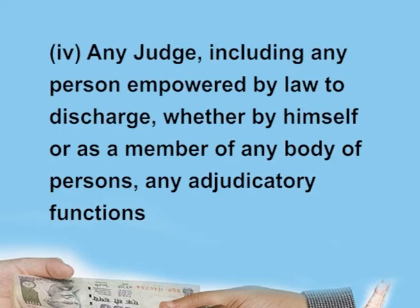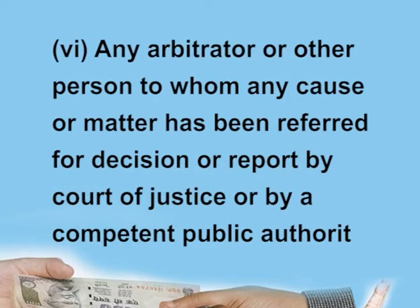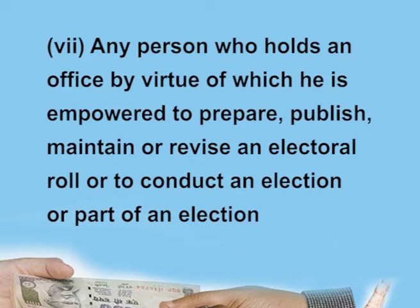Number 4, any judge, including any person empowered by law to discharge, whether by himself or as a member of any body of persons, any adjudicatory function. Number 5, any person authorized by a court of justice to perform any duty in connection with the administration of justice, including a liquidator, receiver or commissioner appointed by such court. Number 6, any arbitrator or other person to whom any cause or matter has been referred for decision or report by a court of justice or by a competent public authority. Number 7, any person who holds an office by virtue of which he is empowered to prepare, publish, maintain or revise an electoral role or to conduct an election or part of an election.